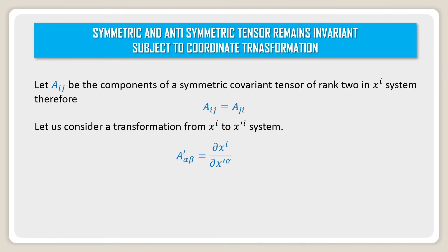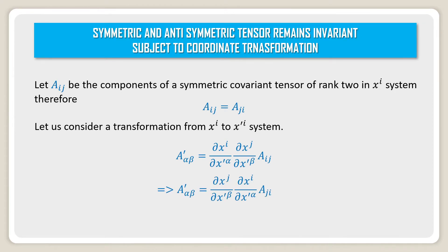Therefore, we can write a'_{αβ} = (∂x^i / ∂x'^α) · (∂x^j / ∂x'^β) · a_{ij}. In the next step, we can write (∂x^j / ∂x'^β) · (∂x^i / ∂x'^α) · a_{ji}, because a_{ij} = a_{ji}.